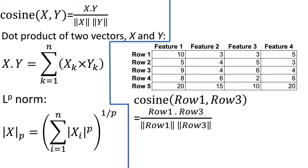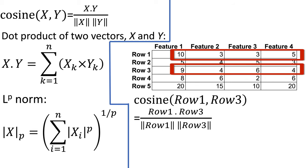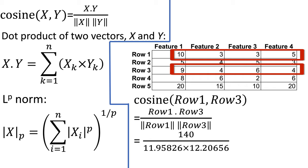The square root of 149 is 12.20656. Now we have all the values we need. Given the equation to compute cosine similarity, the dot product of row 1 and row 3 is 140, the L2 norm of row 1 is 11.95826, and the L2 norm of row 3 is 12.20656. The final result is 0.95910660702.